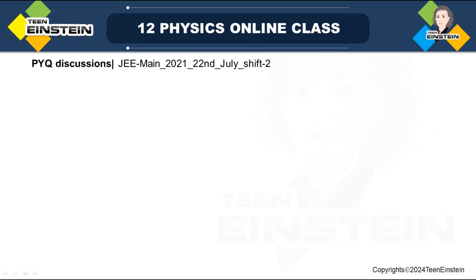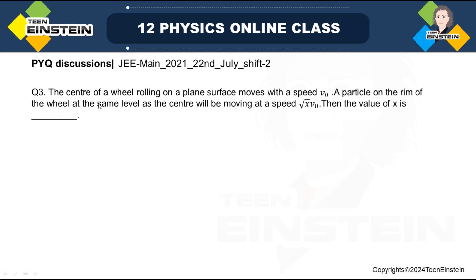Let us go to the next problem. This question says: the center of a wheel rolling on a plane surface moves with speed v₀. A particle on the rim of the wheel at the same level as the center will be moving at speed √x · v₀. Find the value of x.